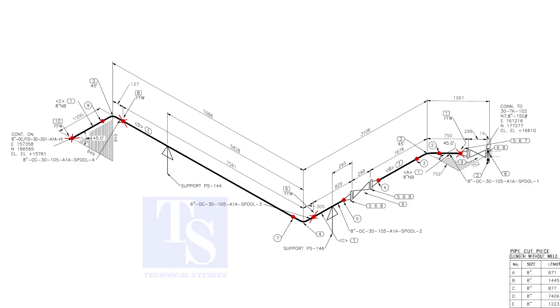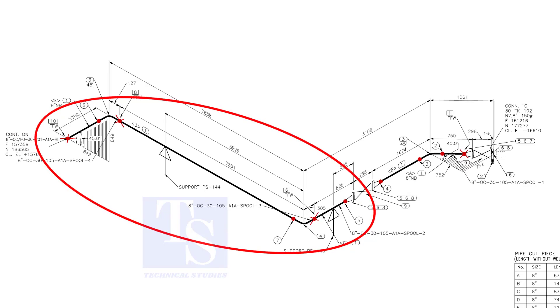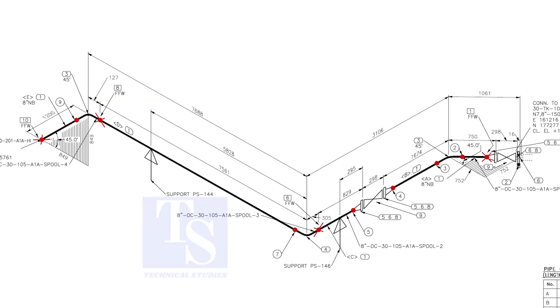We are going to fabricate this part of the piping. In this part of the drawing, there are three spools.